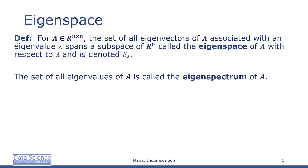If A is a square n-by-n matrix, the set of eigenvectors of A associated with an eigenvalue lambda spans a subspace of R^n, which is called the eigenspace of A with respect to lambda, denoted E sub lambda. The set of all eigenvectors of A is called the eigenspectrum, or just the spectrum of A. If lambda is an eigenvalue of A, then the corresponding eigenspace E sub lambda is the solution space of the homogeneous system A minus lambda I times x equals zero.